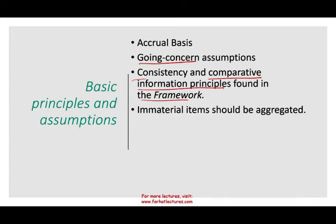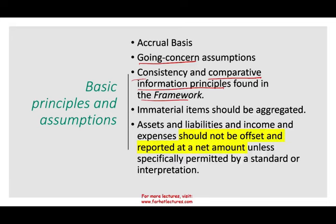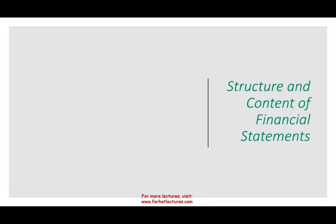Another assumption: immaterial items should be aggregated — if we have immaterial items, we can add them together. Also, assets and liabilities, income and expenses should not be offset and reported at a net amount. There is no offsetting allowed, unless specifically permitted by the standard, which is very rare.